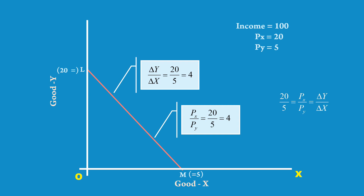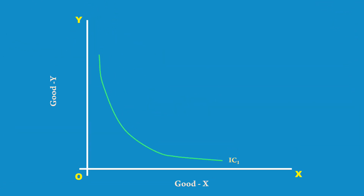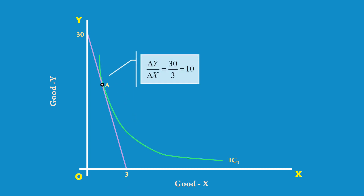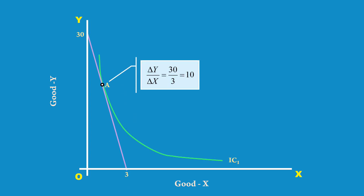We shall now turn to the indifference curve. This is a non-linear curve, meaning its slope varies from point to point. To measure the slope of an indifference curve, take point A and draw a tangent to that point. Find the Y coordinate of the Y intercept — it is 30. Find the X coordinate of the X intercept — it is 3. Using the formula delta Y by delta X, 30 divided by 3 gives us 10. At point A, the slope of the IC is 10.